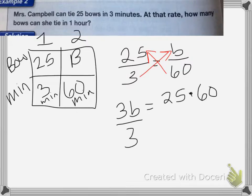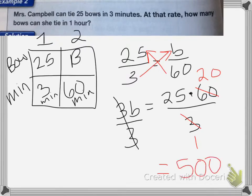Divide both sides by 3. I can cancel the 3 and the 60. 3 becomes 1, 60 becomes 20. So I end up with 25 times 20, which equals 500 bows she can tie in one hour.